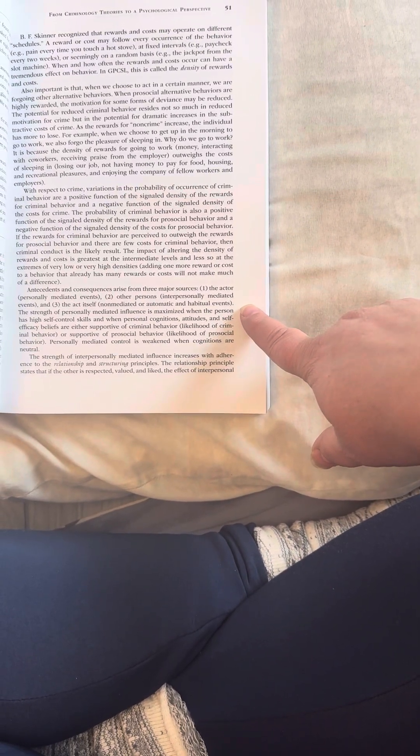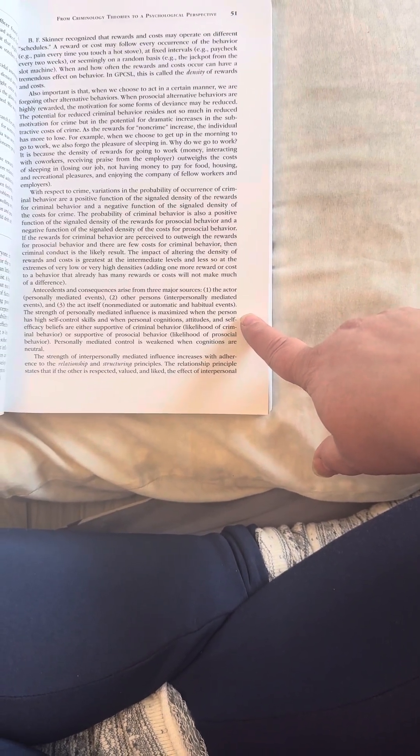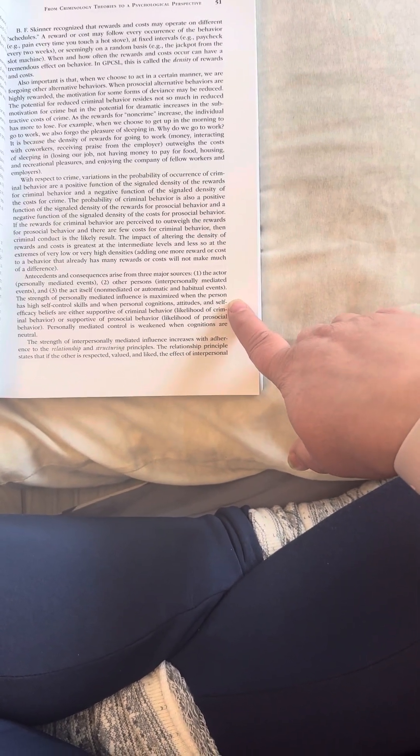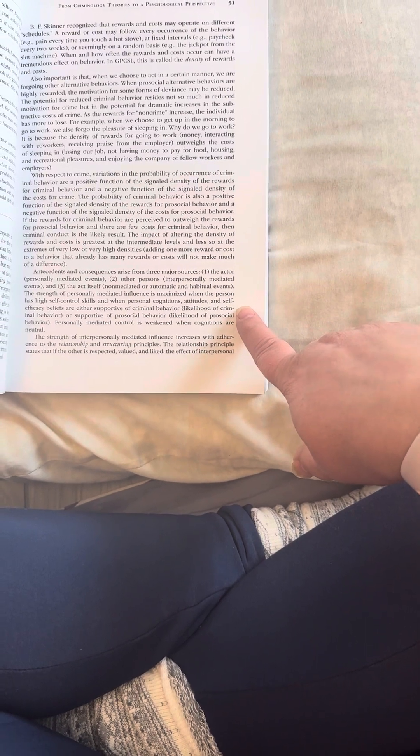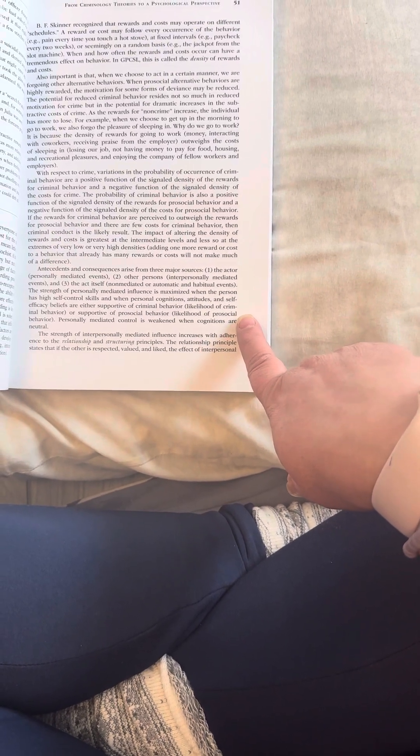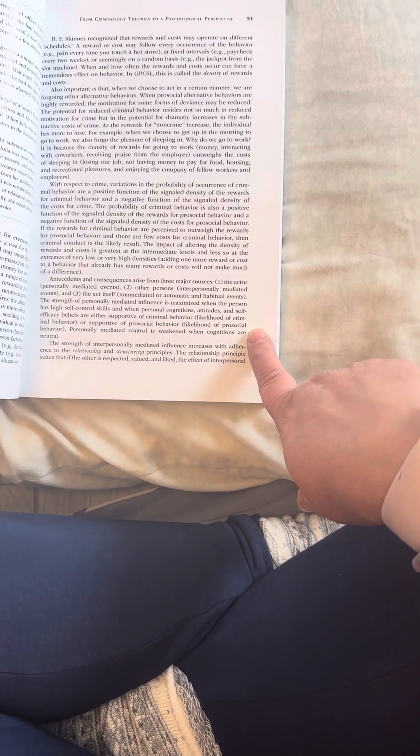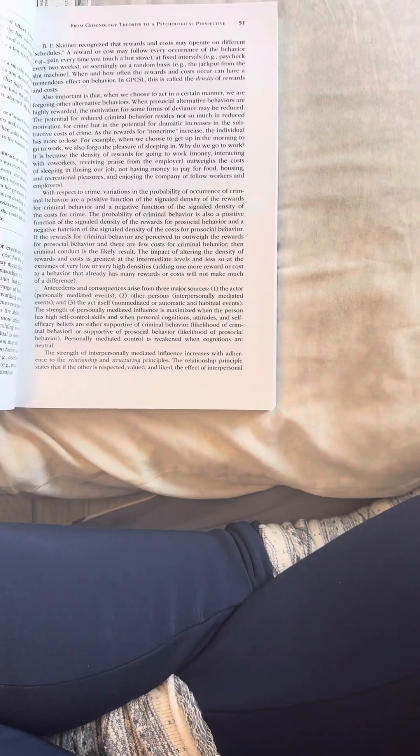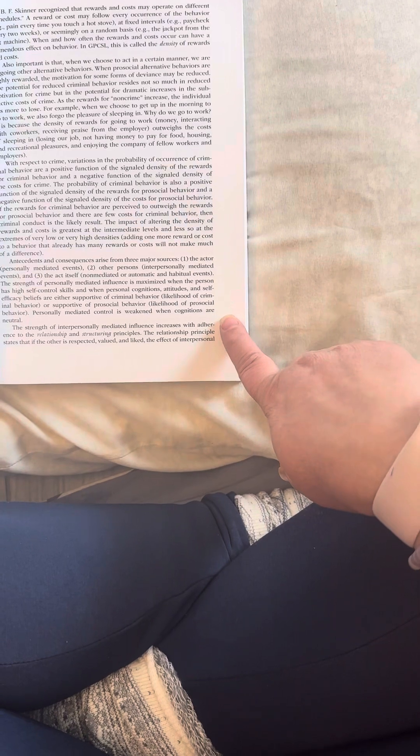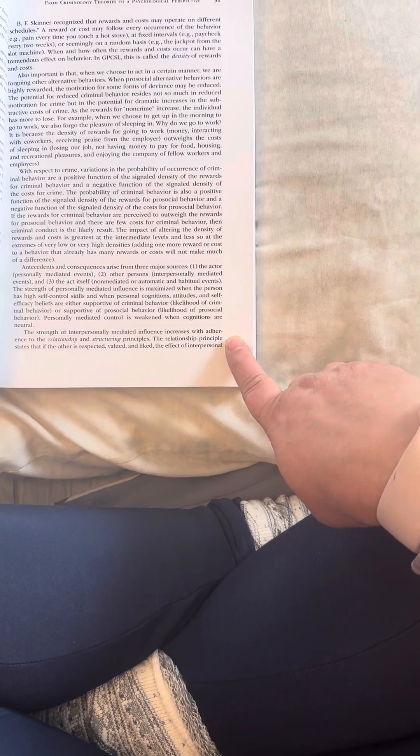Antecedents and consequences arise from three major sources. One, the actor personally mediated events, two, other persons, interpersonally mediated events, and three, the act itself, non-mediated or automatic and habitual events. The strength of personally mediated influence is maximized when the person has highly self-controlled skills and when personal cognitions, attitudes, and self-efficacy beliefs are either supportive of criminal behavior, likelihood of criminal behavior, or supportive of pro-social behavior, likelihood of pro-social behavior. Personally mediated control is weakened when cognitions are neutral.